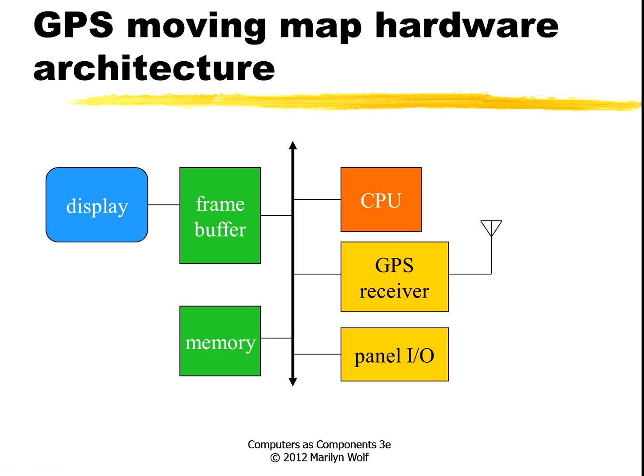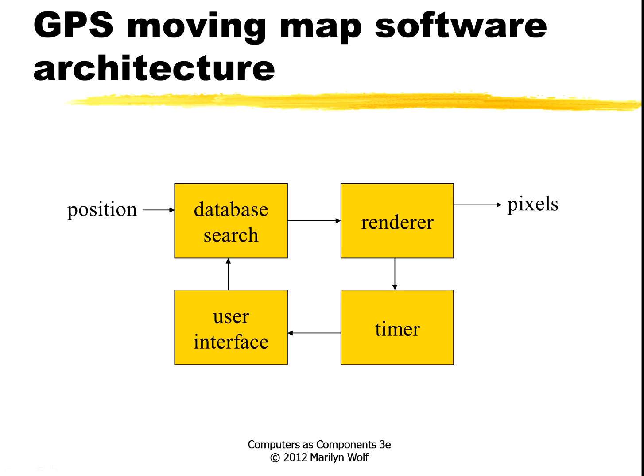Looking at the hardware architecture, it's a fairly generic system with a CPU connected to a bus. We have a GPS receiver, IO devices for the panel, a display, a frame buffer as memory for the display, and some general memory. For the software architecture, position comes in through the database search engine, which talks to the renderer, which outputs pixels to draw on the screen. There's a timer that also connects to the user interface, to track how long you're taking to respond to button pushes — and perhaps reverting to the old display if the user hasn't pushed a button in a certain amount of time.